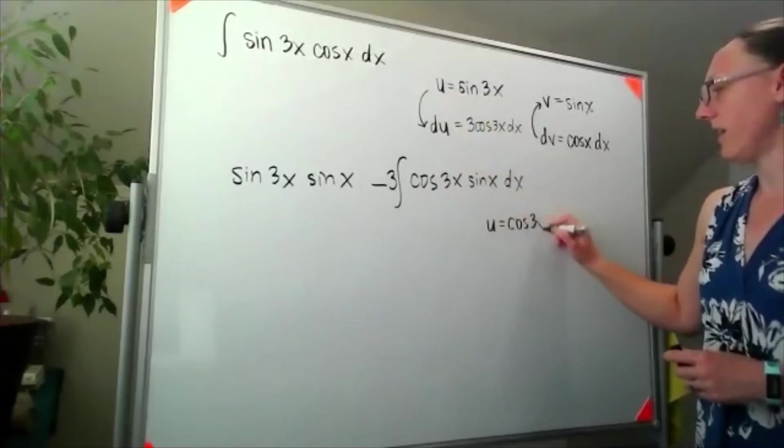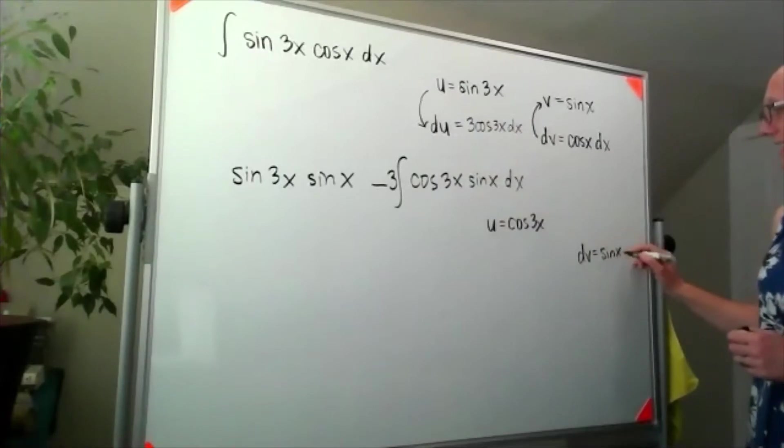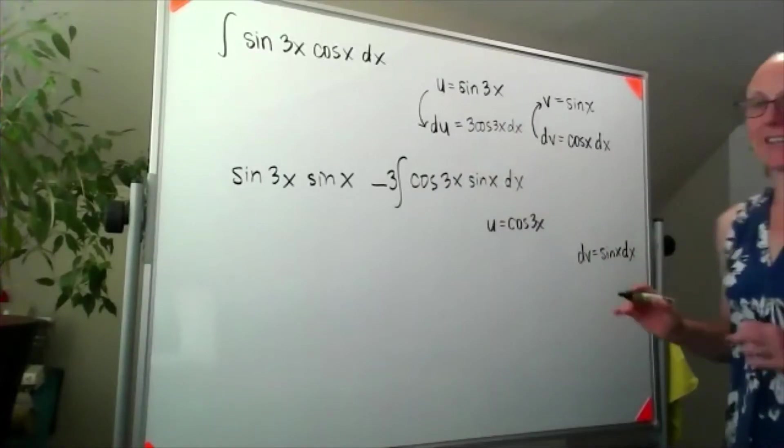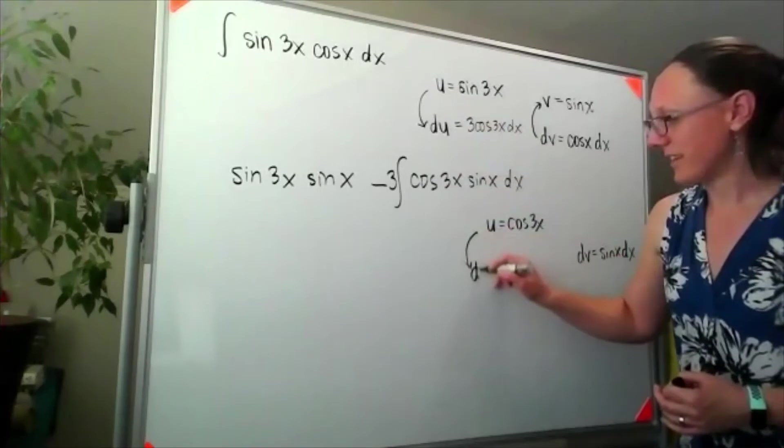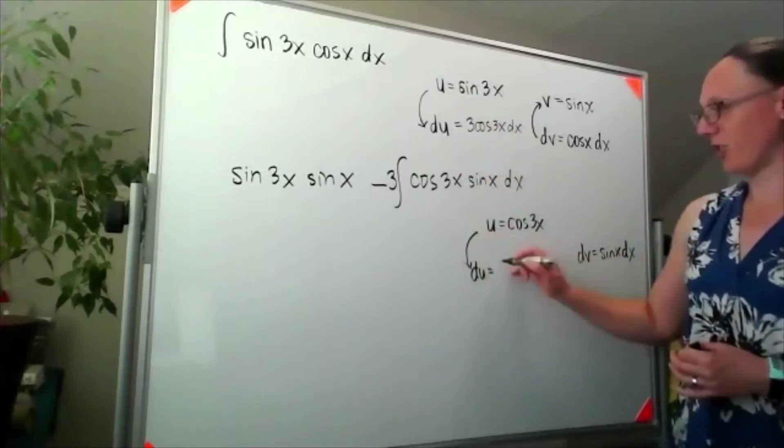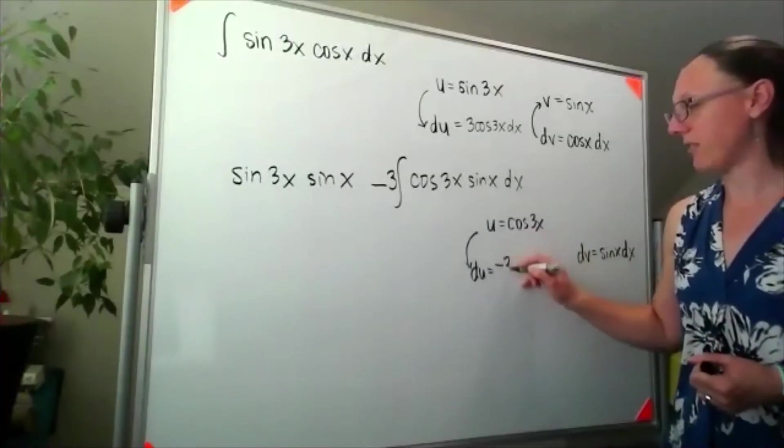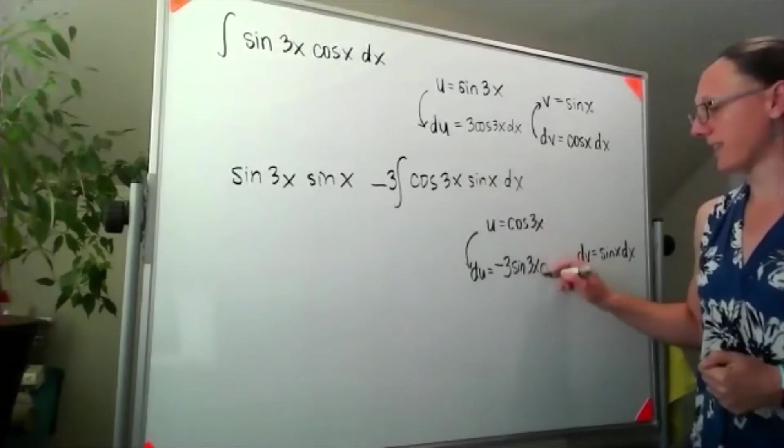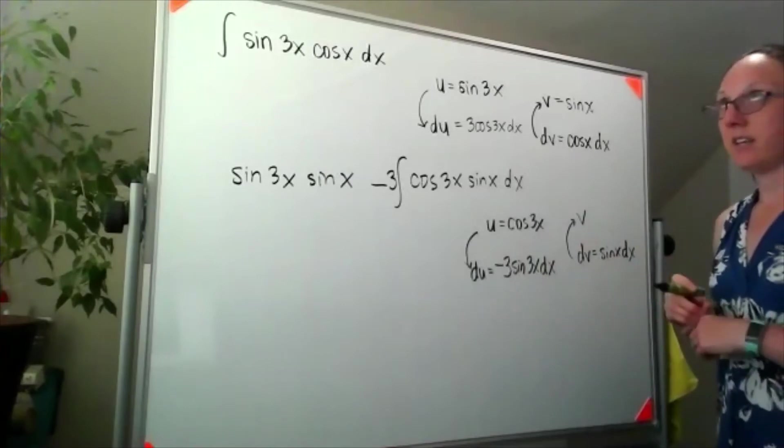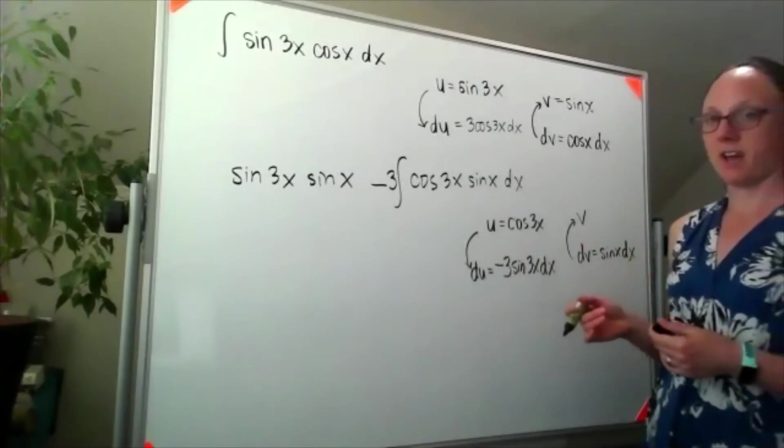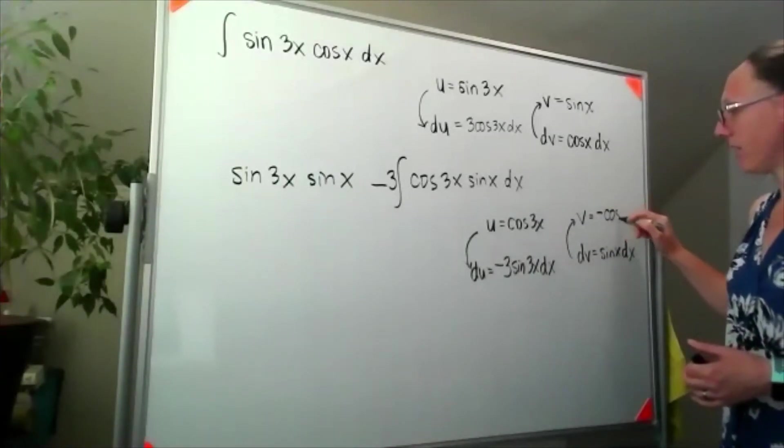So now my u will become cosine of 3x, and my dv will be the sine of x dx. I think this is going to work, and if it doesn't we'll have to do it the other way. So when I find my du - derivative of cosine is negative sine - so I'll have negative 3 sine 3x dx. And when I integrate sine of x, the function whose derivative is positive sine is negative cosine, so my v would be negative cosine of x.